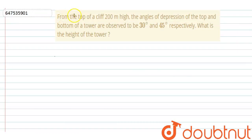Hello everyone, let's start the question. The question says, from the top of a cliff 200 meter high, the angle of depreciation of the top and bottom of a tower are observed to be 30 degree and 45 degree. We need to find the height of the tower.